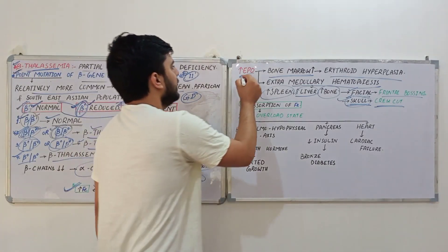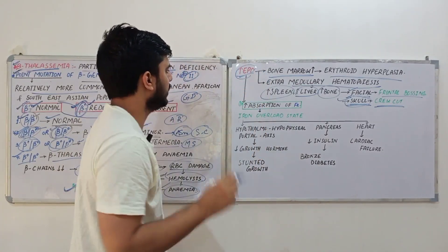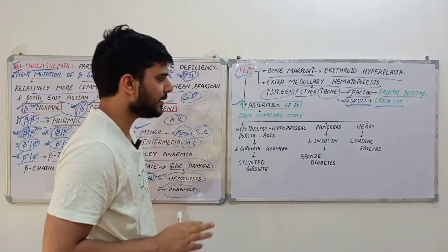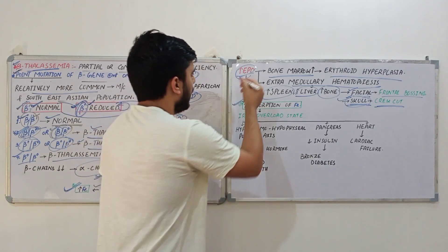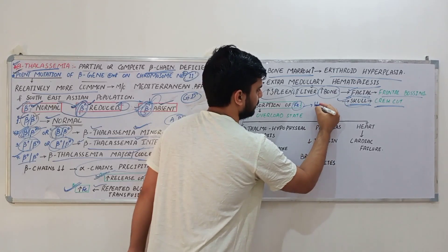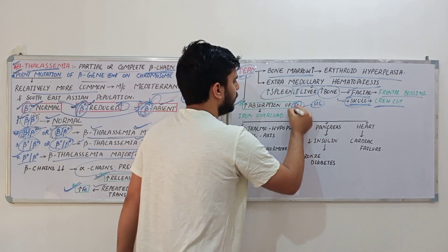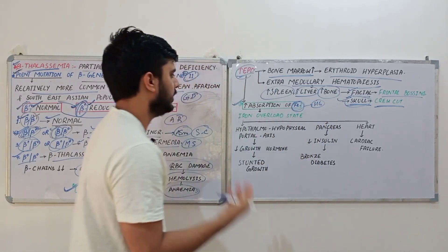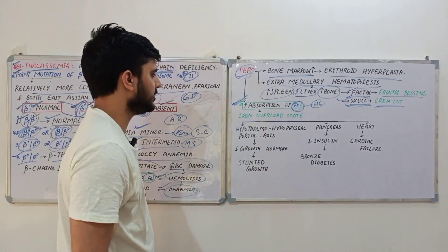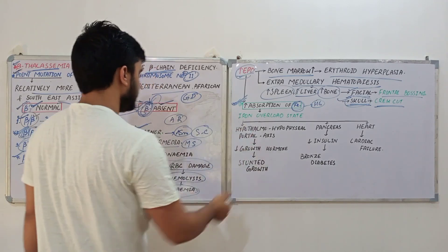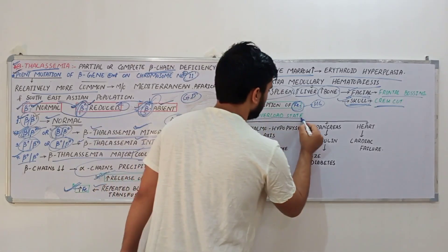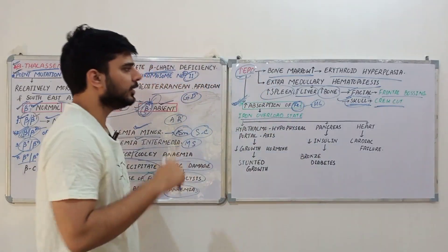Erythropoietin also increases absorption of iron from the alimentary canal, because the synthesis of RBCs requires more iron for hemoglobin. This, combined with iron released from hemolysis and iron from blood transfusions, leads to an iron overload state.